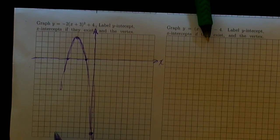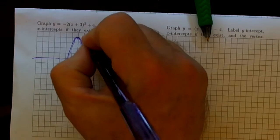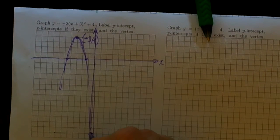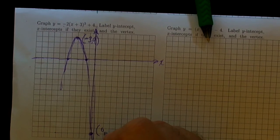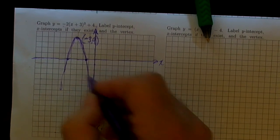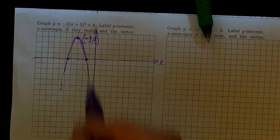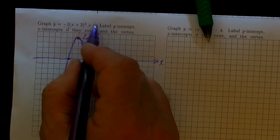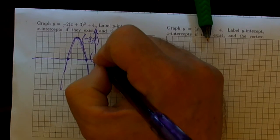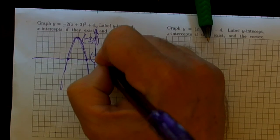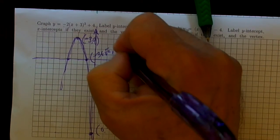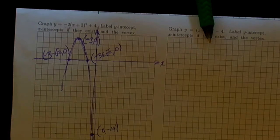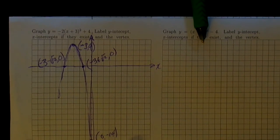By symmetry we could actually tell another point over here that exists. So we'd want to label all these points. This happens to be the point minus 3, 4—we knew that immediately just because of the form of the equation. This point, 0, minus 14, we had to do a little bit of calculating for. And these two points we were able to solve. When things are in this form, it's easy to solve for the x-intercepts. This happens to be the point negative 3 plus the square root of 2 and a y-value of 0, and this is negative 3 minus the square root of 2 and a y-value of 0. Okay, that's how that one works.